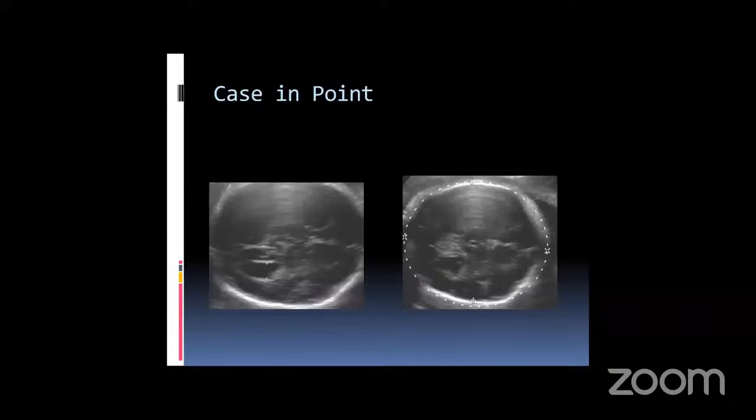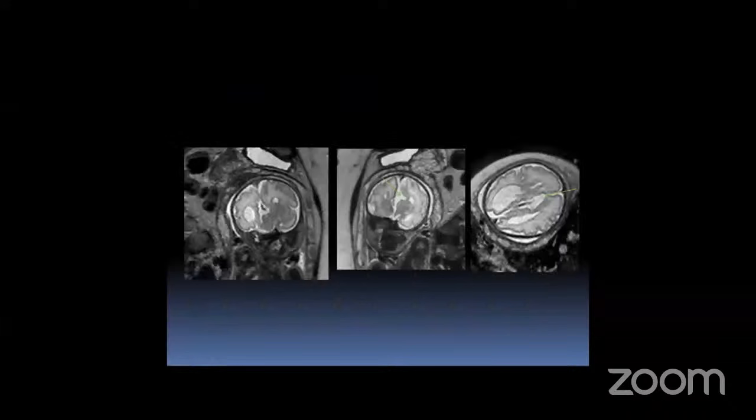As a case in point: a fetus at approximately 32 weeks presented with mild hydrocephalus. The intracranial structures were difficult to see because of skull ossification. On MRI, not only did we find absence of the corpus callosum, but there was also a small area of communication between the ventricular system and the arachnoid space — a small area of schizencephaly found on MRI that was not visible on ultrasound.